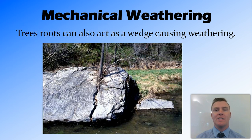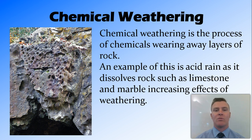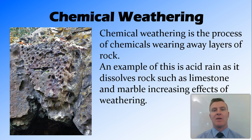Roots from trees can also grow in between those cracks and act as a wedge, causing those rocks to break off in weathering. Chemical weathering, on the other hand, is the process of chemicals wearing away the layers of the rock. When we say chemicals, we're usually talking about acids, and in particular something we think about is acid rain.